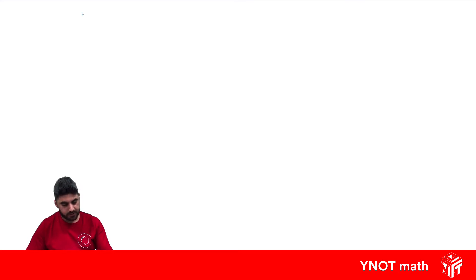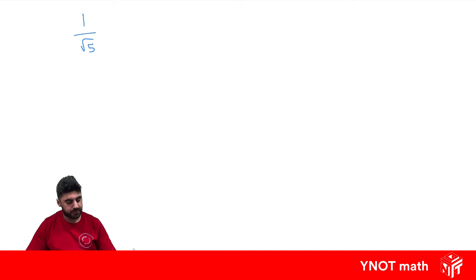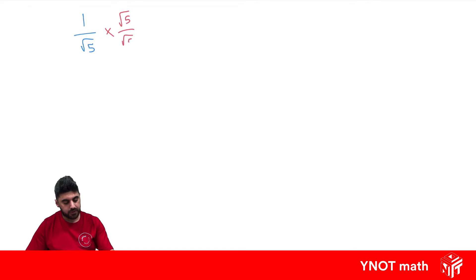Let's have a look at 1 over root 5. This isn't nice because we do have a surd in our denominator. So how can we get rid of it? It's kind of like making equivalent fractions. We need to multiply by root 5 over root 5, and we can do this because root 5 over root 5 is 1, so we're multiplying everything by 1, so it's not going to change its value.